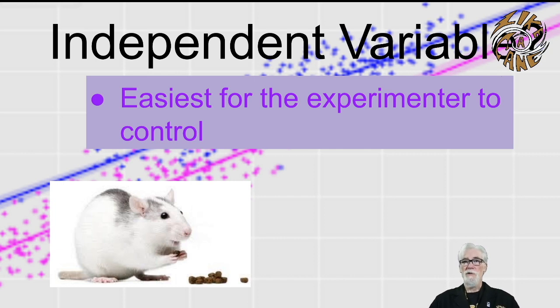Instead, the experimenter would be wiser to choose some measurable aspect of the rodent's diet and change that on purpose, and then watch what happens to a measurable quantity of the rodent, like its weight.